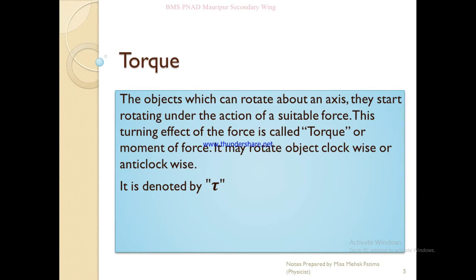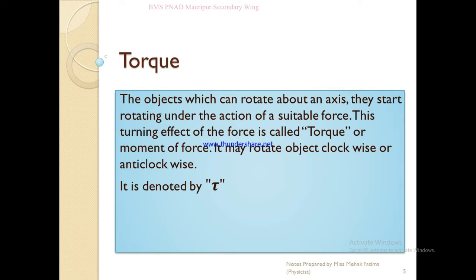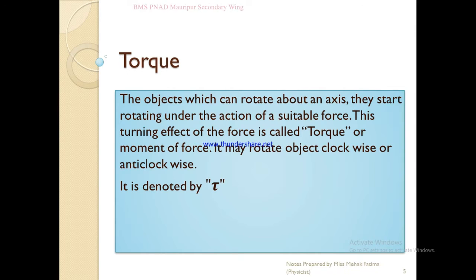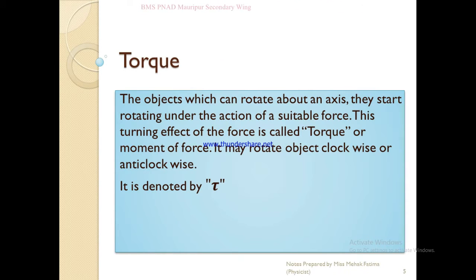What is Torque? Torque is the turning effect of a force on an object that can rotate about an axis. Objects start rotating under the action of a suitable force, and this turning effect of force is called Torque or moment of a force. It may rotate an object clockwise or anticlockwise, and it is denoted by the symbol Torque (τ).